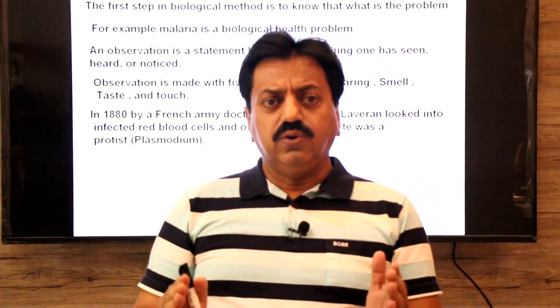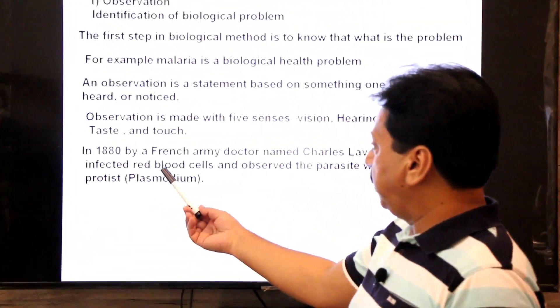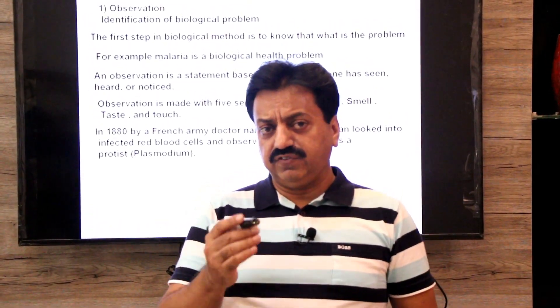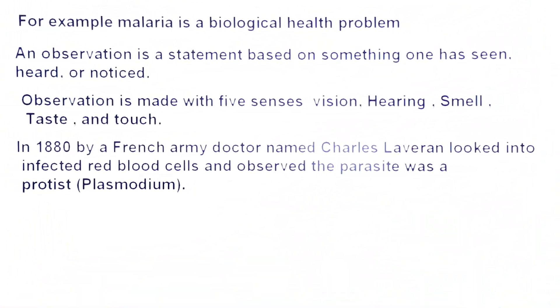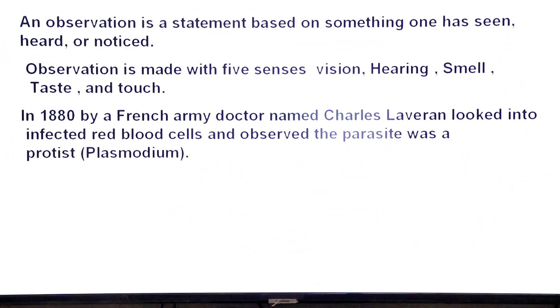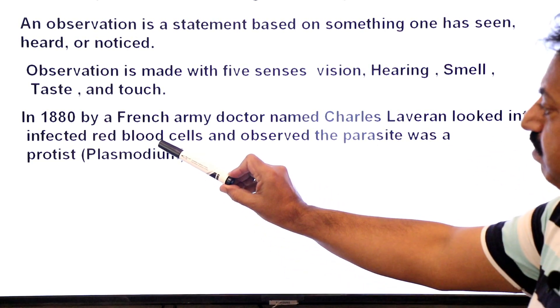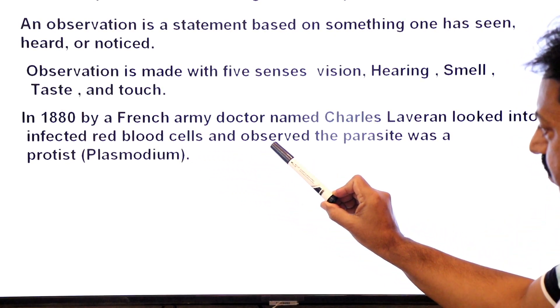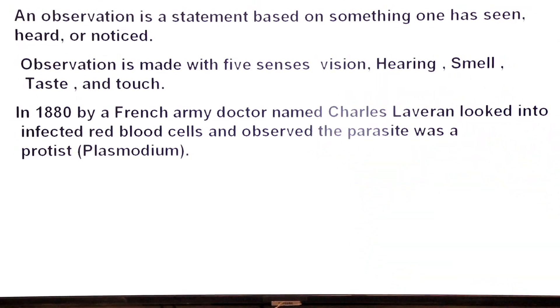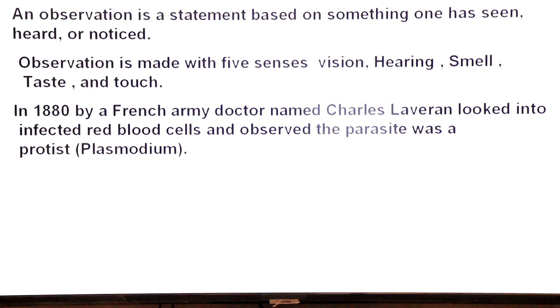Regarding the early observations on malaria, the first major role was played by a French army doctor, Charles Laveran. He was the first who observed the presence of the malarial parasite inside the red blood cells of infected patients in 1880. He looked into the infected red blood cells with the help of a microscope and observed that the parasite found was plasmodium.